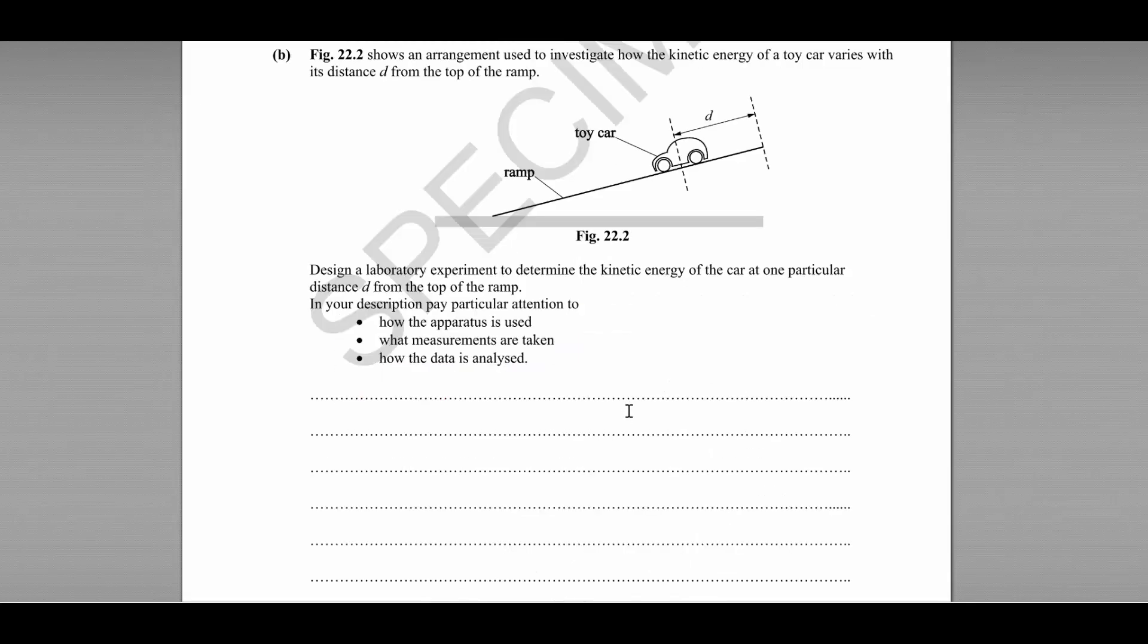Part B gives us an experiment with a toy car on a ramp and the experiment is aiming to determine how the kinetic energy of the car varies with distance from the top of the ramp. So you have to design an experiment to determine this, paying attention to how the apparatus is used, what measurements are taken and how the data will be analyzed. It is very important in questions like this that you address all of those suggested bullet points.